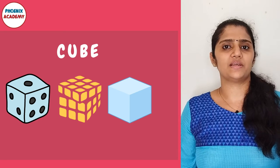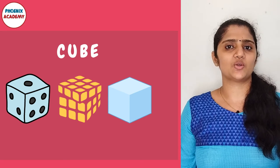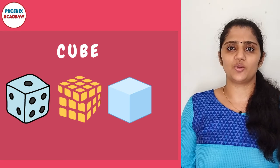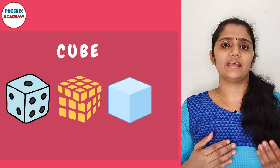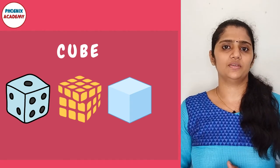A cuboid with all the edges of the same length is called a cube. Here are some examples of a cube: a die, a Rubik's cube, and a sugar cube.